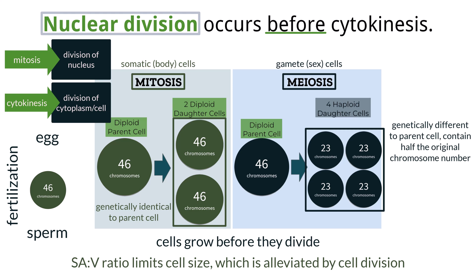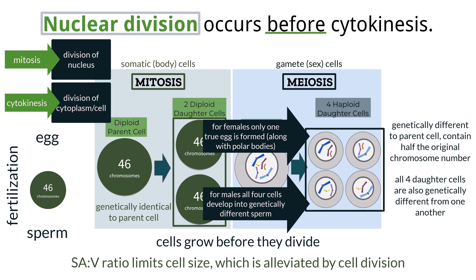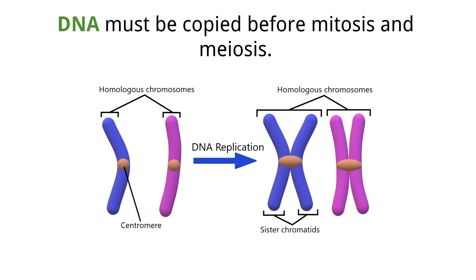Meiosis is a process that produces four daughter cells, each having only half the number of chromosomes, and each one of those daughter cells is genetically different from their parent and each other. This ensures there is genetic diversity in offspring. While the diagram shows four genetically different daughter cells, remember that in oogenesis, only one true egg is formed with two to three polar bodies. This unequal division of cytoplasm does not occur in the production of sperm.